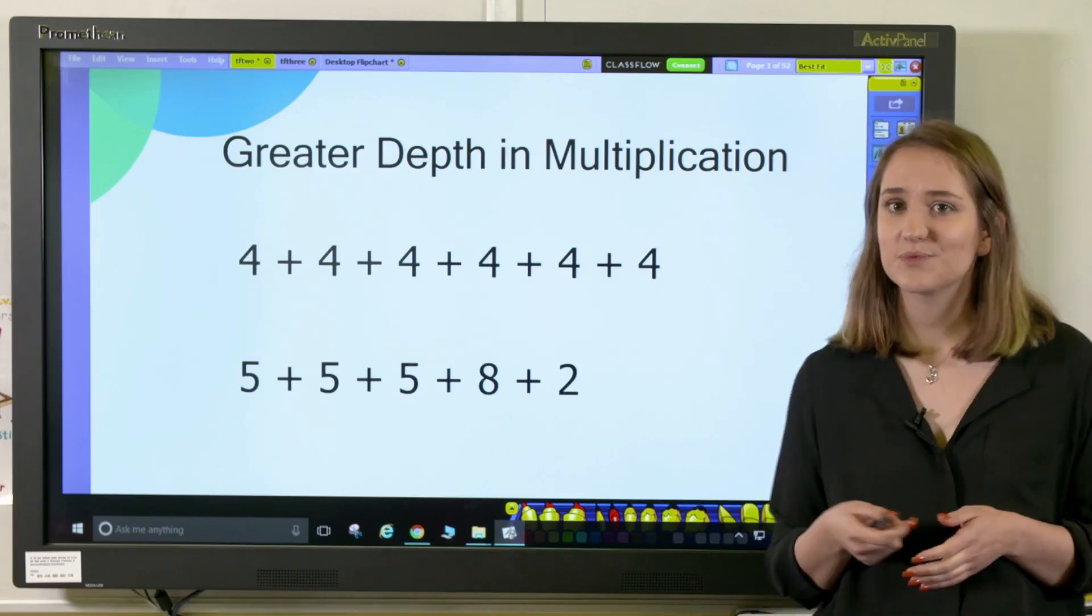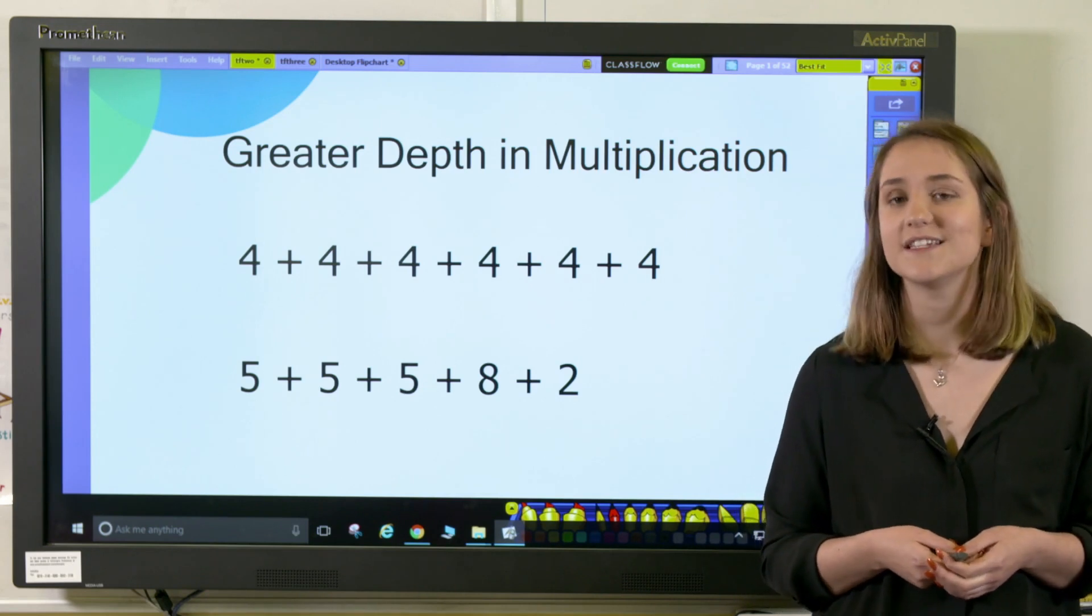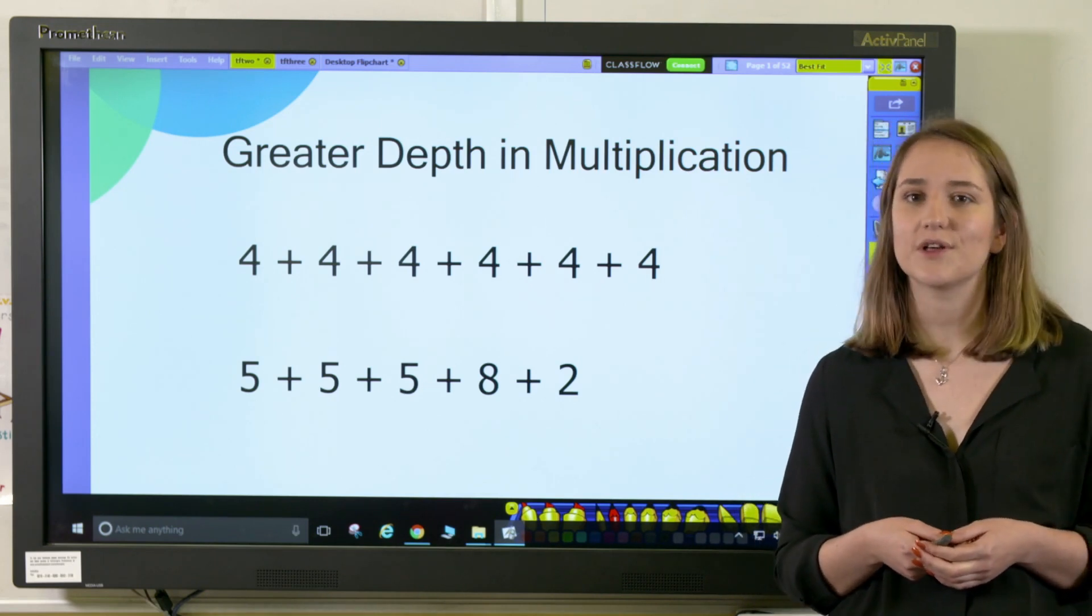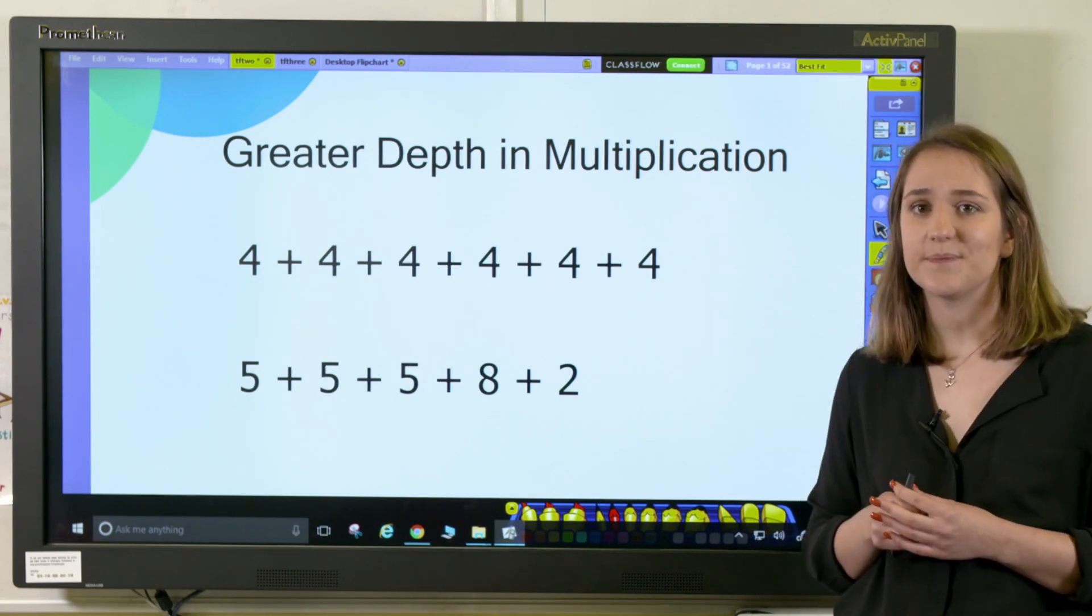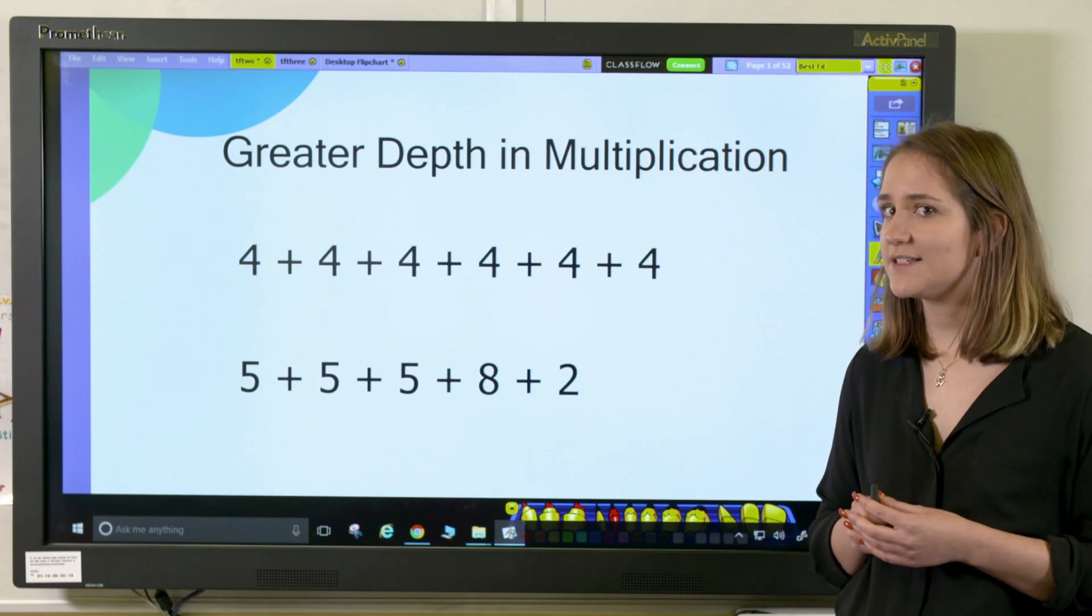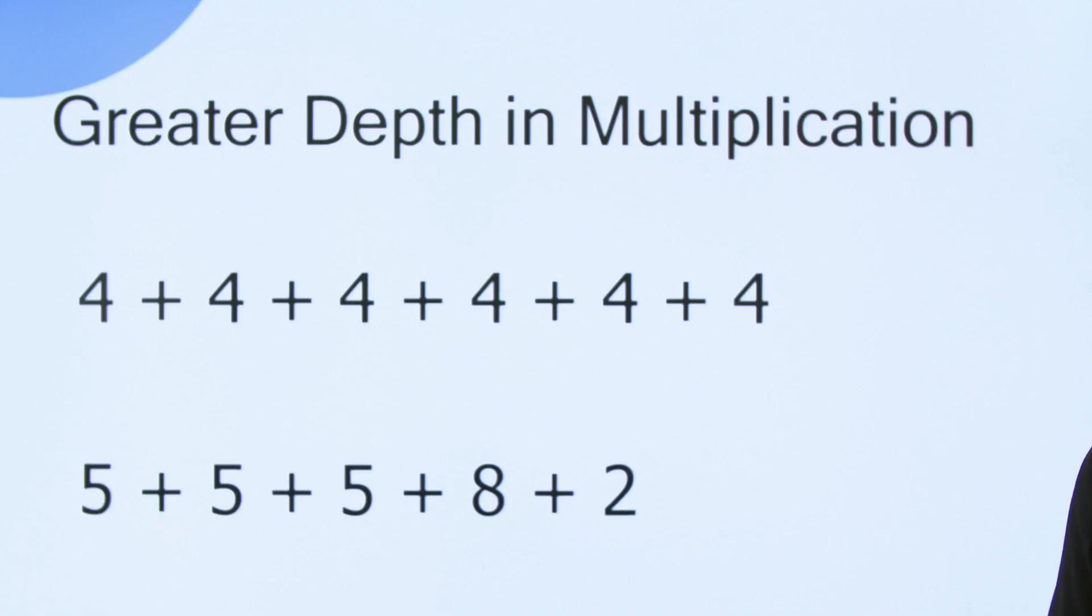This first problem is a really good one for year three, however could easily be adapted for older or younger pupils. It asks pupils to rewrite this addition as multiplication, so it's important that they can understand the link between repeated addition and multiplication.